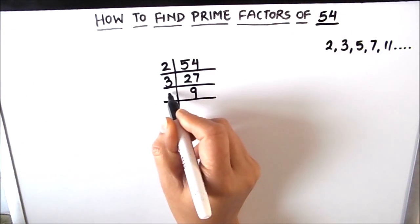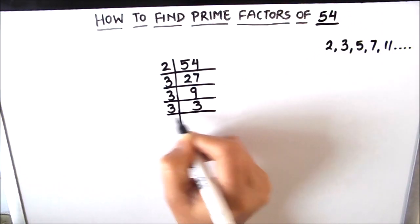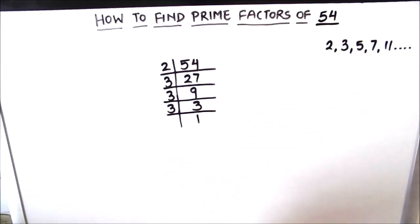9 can be divisible by number 3. 3 times 3 is 9, and 3 is a prime number. It is only divisible by number 3. So 3 times 1 is 3.